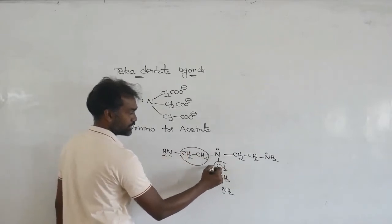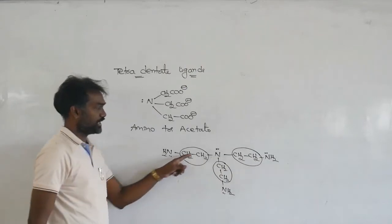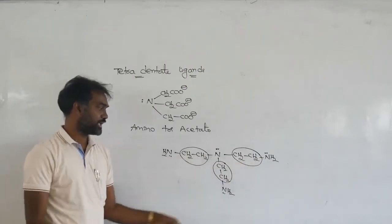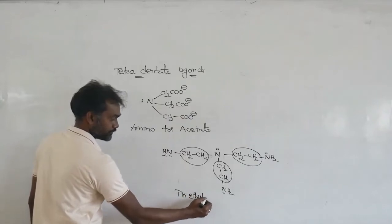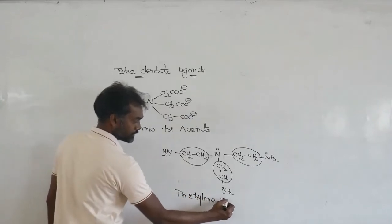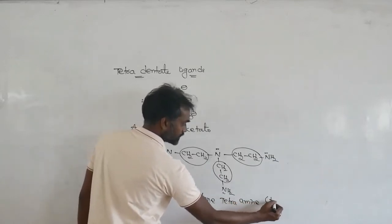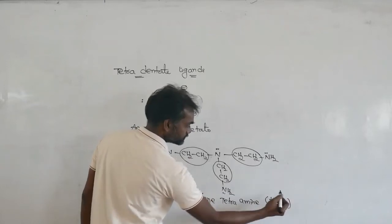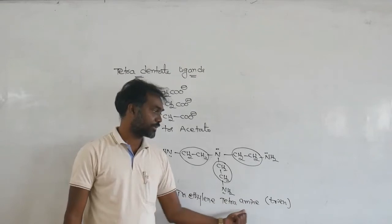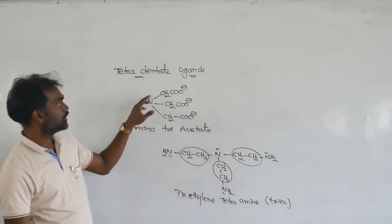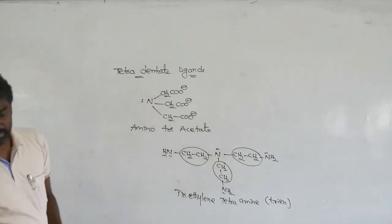This next one is neutral. It has an ethylene part — three ethylene units. It is called triethylene tetramine (trien), represented as 'trien'. These four nitrogen atoms provide four donor sites, so it is tetradentate.